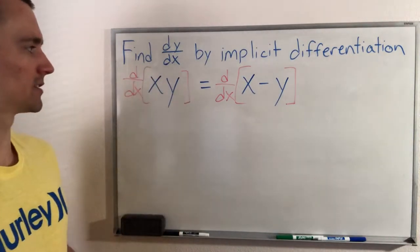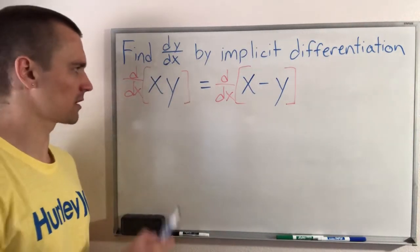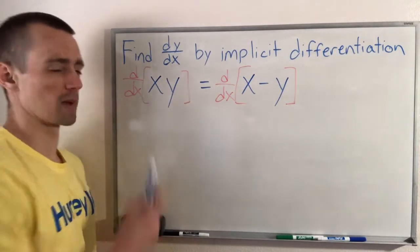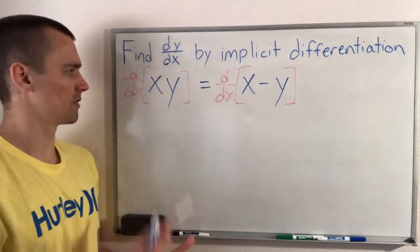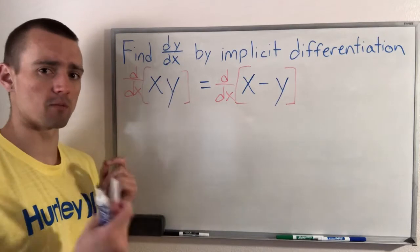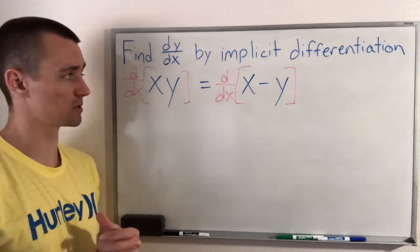So that's all we're going to do. So let's start here on the left side. First, we need to take the derivative of x times y with respect to x. So how do you find the derivative of that? Well, since we have x times y, two things being multiplied together, we're going to need to use the product rule.